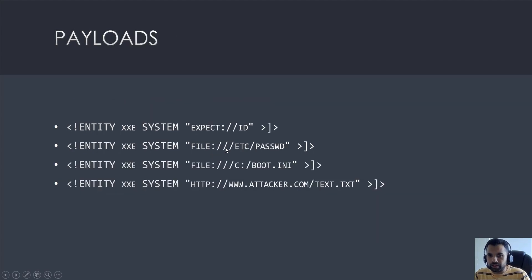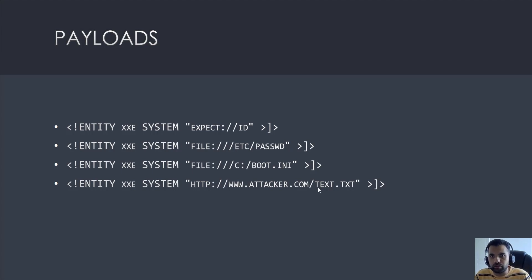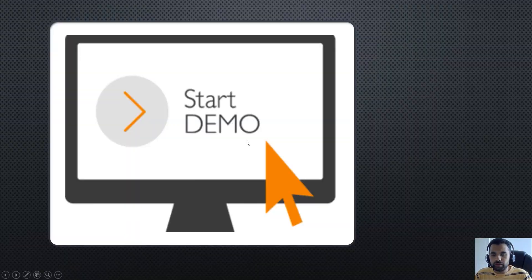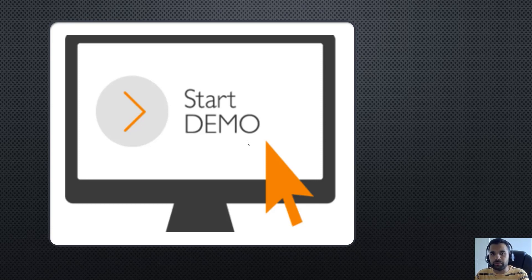What are the different payloads you can use? The first one is for remote code execution — you can use 'expect://' followed by a command like 'id'. This has to be enabled on the Linux machine, but it gives you RCE. You can also refer to an internal file like the password file of users. You can also reference Windows paths if the remote server is Windows. You can also reach out to an attacker-controlled system and pull content from it — essentially another form of remote code execution. These are the different payloads available with this vulnerability.